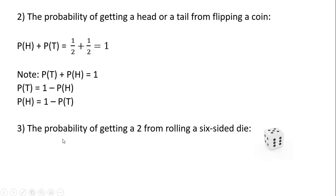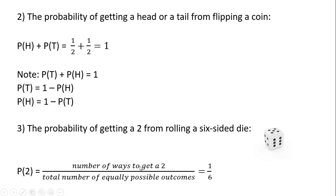Now let's do some dice examples. The probability of getting a 2 from rolling a 6-sided die — the number of ways to get a 2 is only one, and the total number of equally possible outcomes is 6 — so it's just going to be 1 divided by 6.